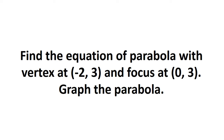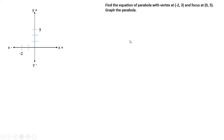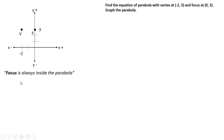Let's work on this problem: find the equation of a parabola with vertex at (-2, 3) and focus at (0, 3), then graph the parabola. First we need to graph the parabola using the given coordinates. We have the vertex at (-2, 3) and focus at (0, 3). In a parabola, the focus is always inside the parabola, so our graph opens to the right.